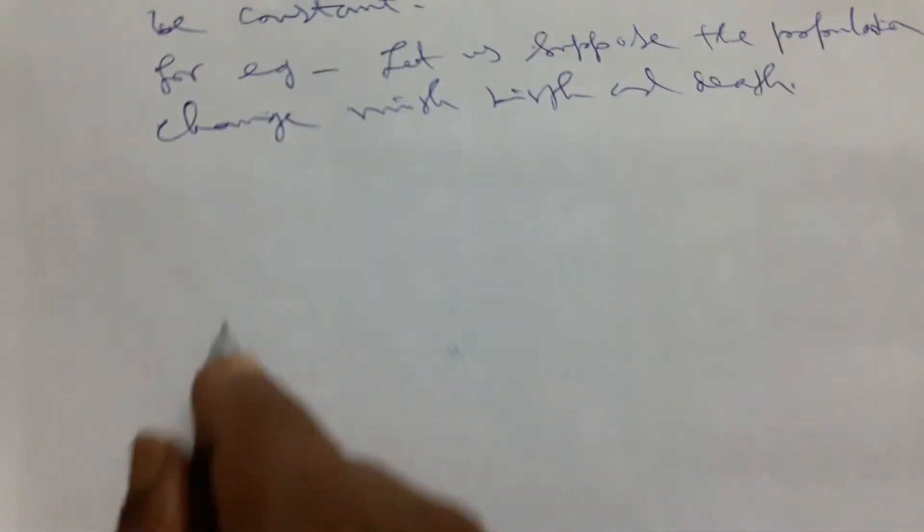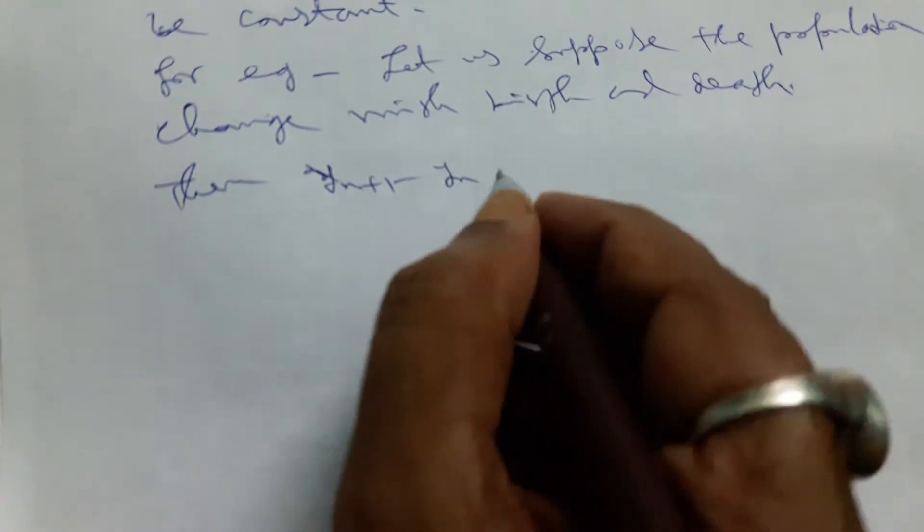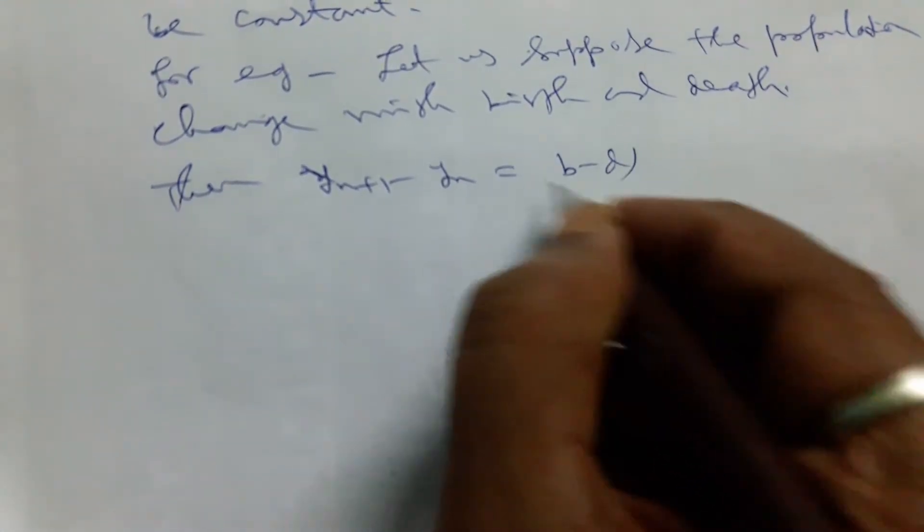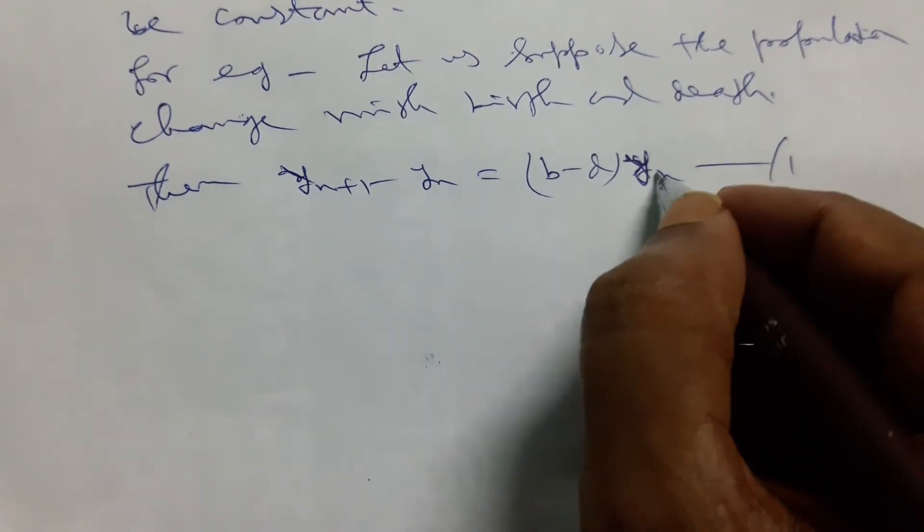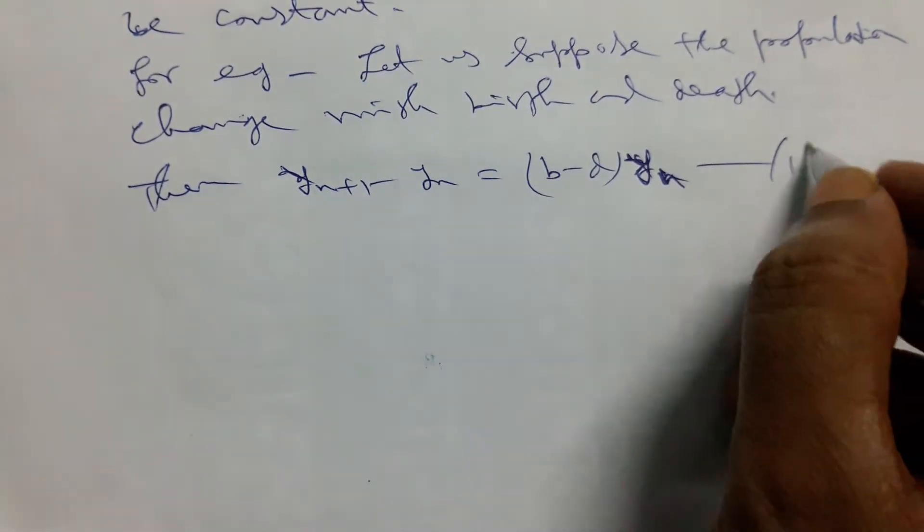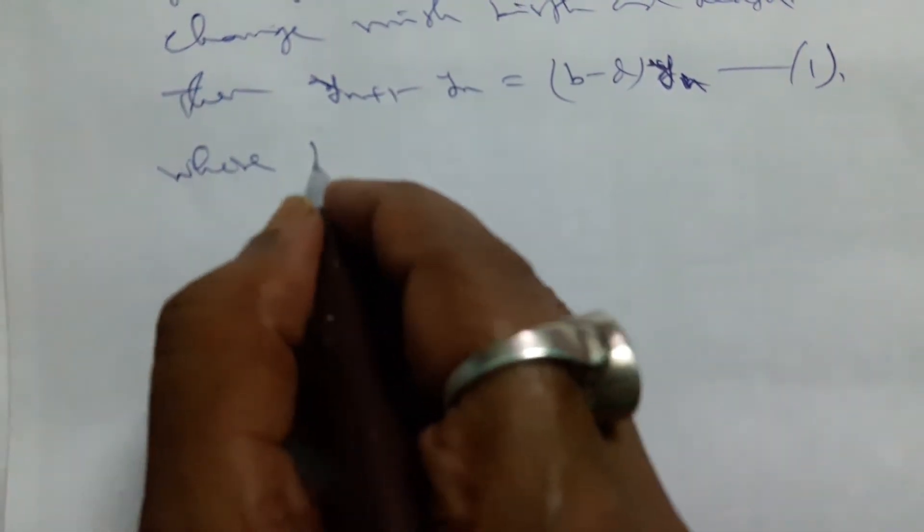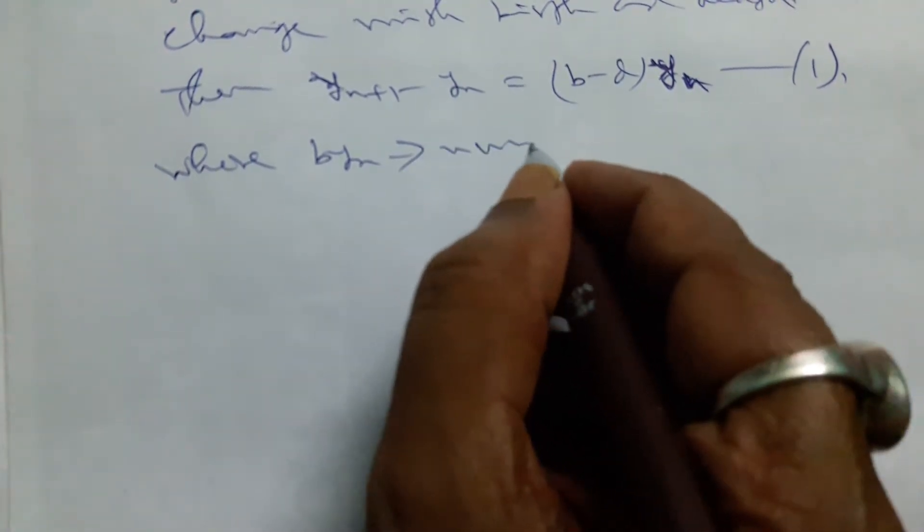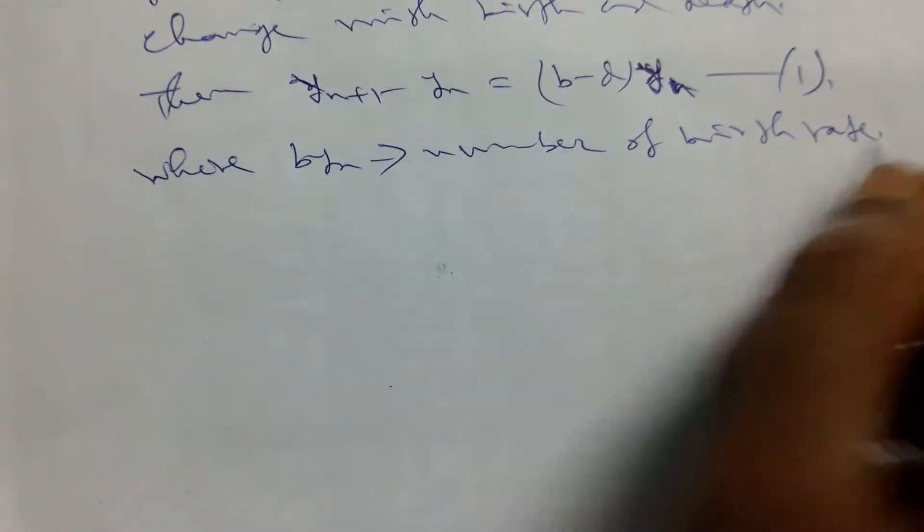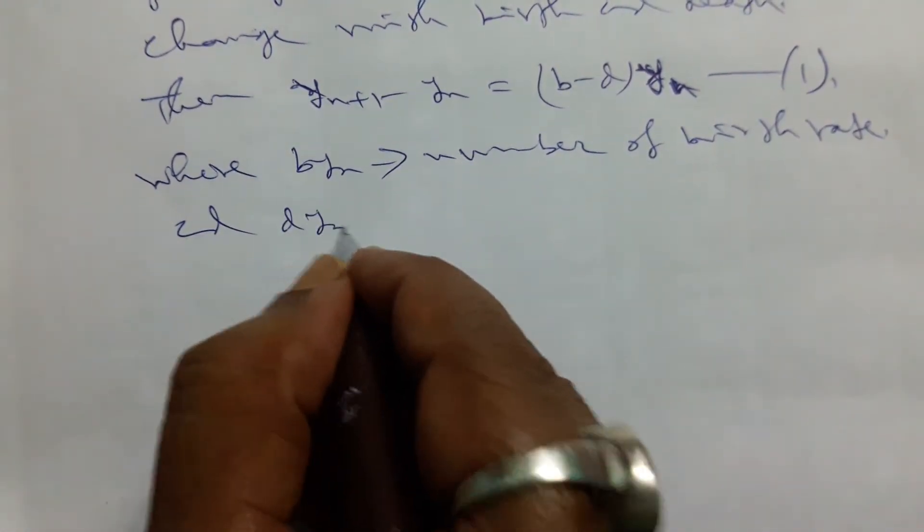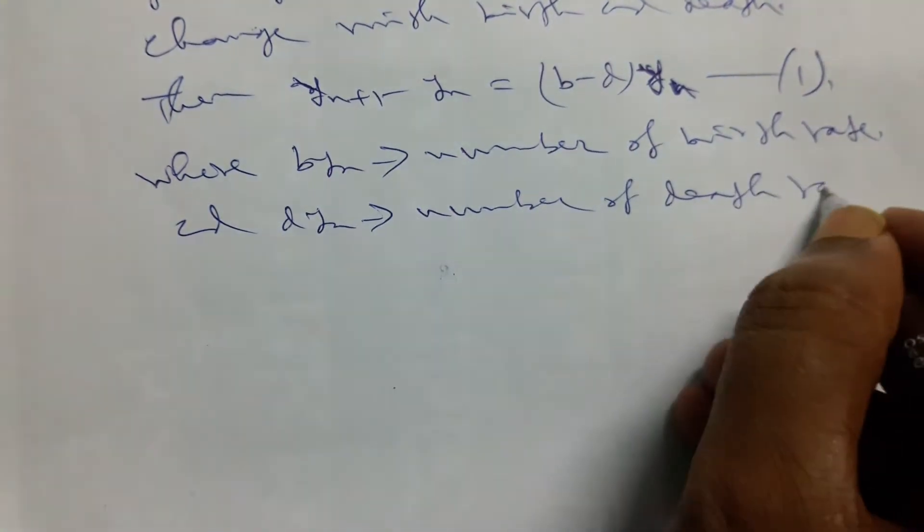Let us suppose the population changes with birth and death. Then y_{n+1} minus y_n will be given by birth rate minus death rate into y_n, taking it equation number 1, where b*y_n is number of birth rate and d*y_n is number of death rate.